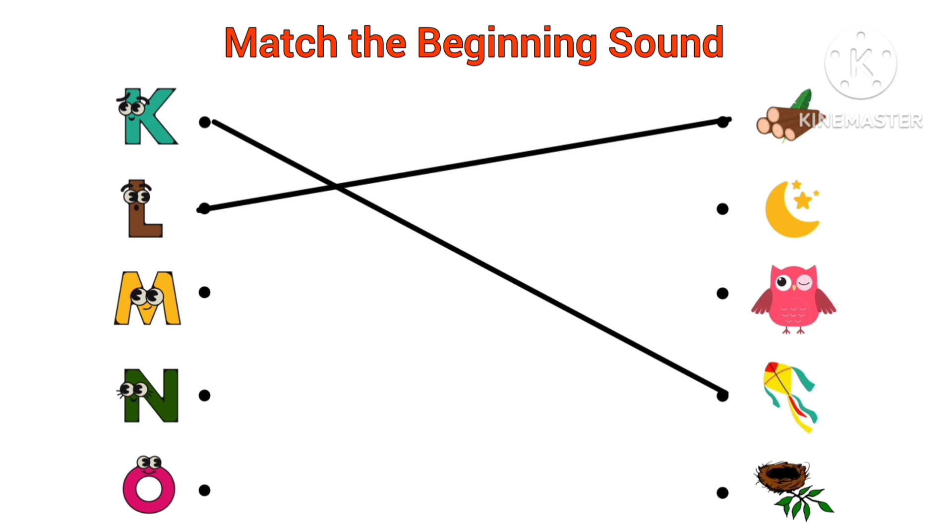M, M for moon. Beginning sound of moon is M. N, N for nest. Beginning sound of nest is N.